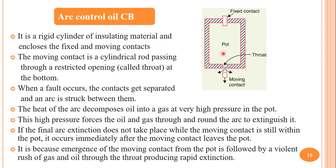Even if arc extinction does not take place inside the pot, the moving contact will be moved outwards from the pot. When it is moved outwards, arc extinction occurs immediately, because emergence of the moving contact from the pot is followed by a violent rush of gases and oil through the throat, producing rapid extinction of the arc. The arc control can be increased by using arc control oil circuit breakers, reducing the operating time for arc extinction.